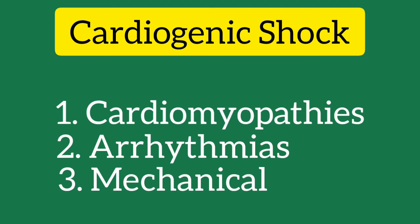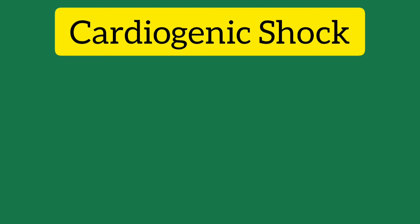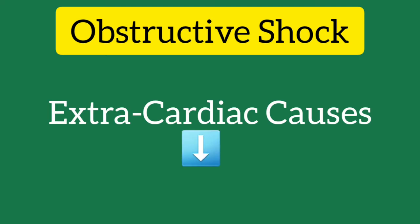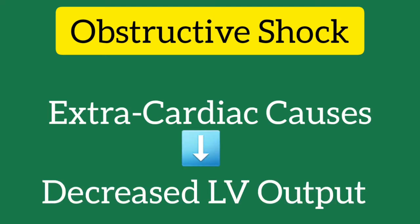Obstructive shock is mostly due to extracardiac causes leading to a decrease in left ventricular cardiac output. It can be due to pulmonary vascular impaired blood flow from the right heart to the left heart, such as hemodynamically significant pulmonary embolism or severe pulmonary hypertension, or due to impaired filling of the right heart from decreased venous return due to extrinsic compression. Examples include tension pneumothorax, pericardial tamponade, restrictive cardiomyopathy, and constrictive pericarditis.